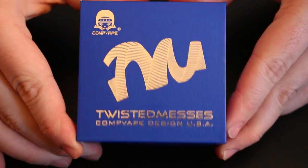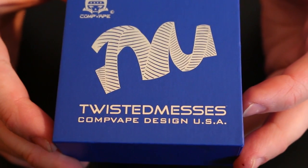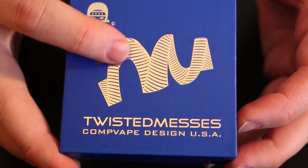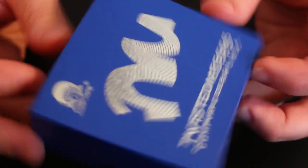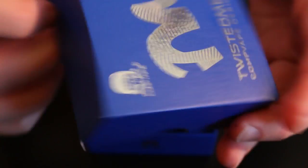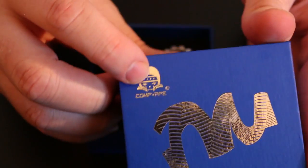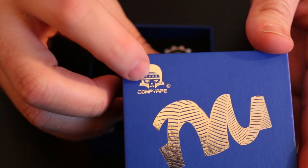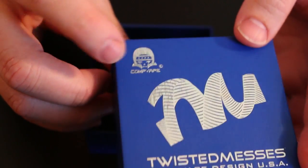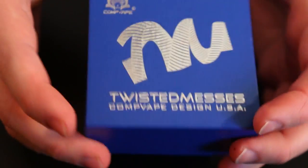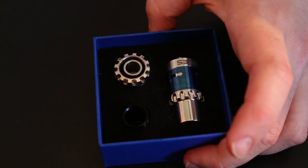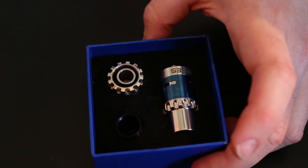This is the box it comes in. A few things to note. It says Compvape. It says Twisted Messes. It has their Twisted Messes logo. It also says Compvape designed in the USA. This looks like Mojo Jojo. My wife reminded me what Mojo Jojo looked like. So you pull that off and that's it. Nothing else on the top.